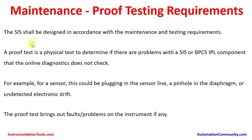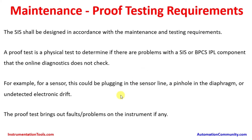Proof testing requirements. The SIS shall be designed in accordance with the maintenance and testing requirements. A proof test is a physical test to determine if there are problems with the SIS or IPL — independent protection layer — components that online diagnostics does not check. For example, for a sensor this could be plugging in the sensor line, a pinhole in the diaphragm, or undetected electronic drift. These are all hidden failures, and during proof testing these failures could be revealed. That is why it is always recommended to conduct proof testing as per the calculated cycle. The proof test brings out latent problems on the instrument if any, and those problems will be highlighted upfront.